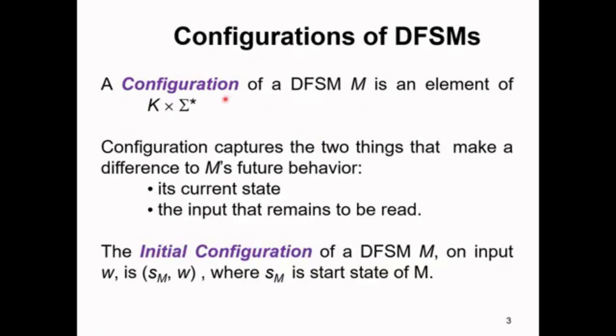A configuration of a DFSM M is an element of K into summation star. Configuration captures two things that make a difference to the machine's future behavior: its current state and the input that remains to be read.